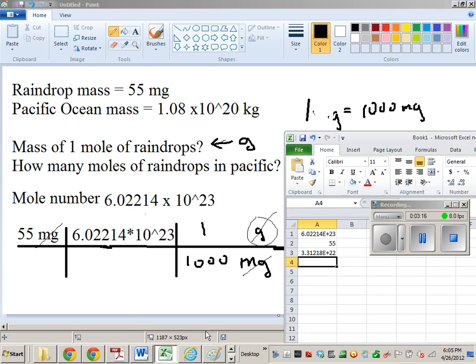So if I go back to my calculation and I divide that by 1,000, I end up getting 3.3 times 10 to the 19. So if I divide the Pacific Ocean mass by that mass, it will tell me how many moles fit in the Pacific Ocean by mass. So 1.08 times 10 to the 20th, divide that by what we just calculated.